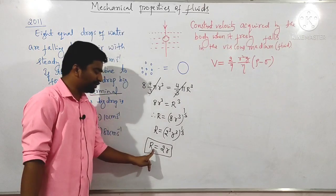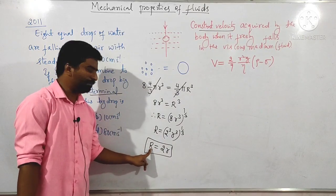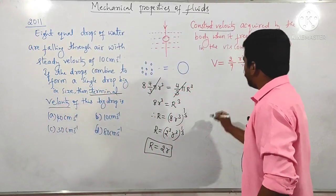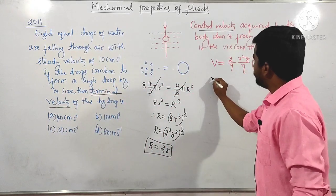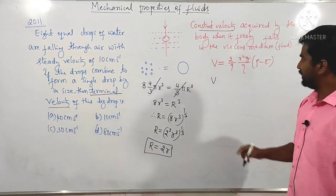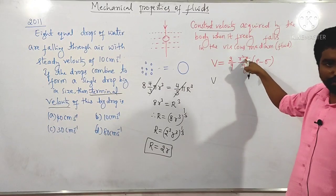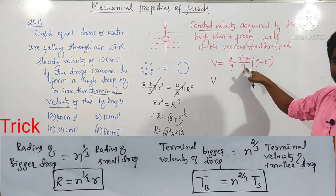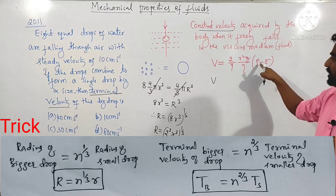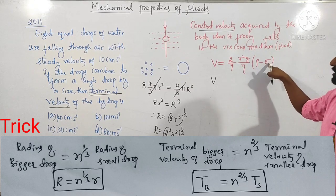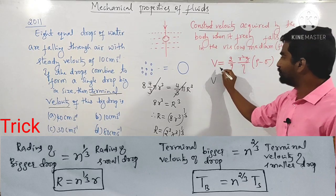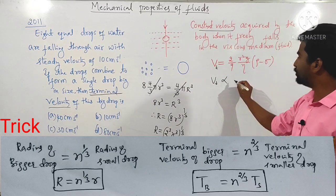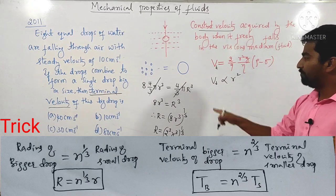We have the relation between the radius of the bigger drop and the radius of the smaller drop. Now we can substitute into the terminal velocity formula. Acceleration due to gravity is constant, η is constant, and density of the spherical body and density of the liquid are also constant. So terminal velocity is directly proportional to radius squared.